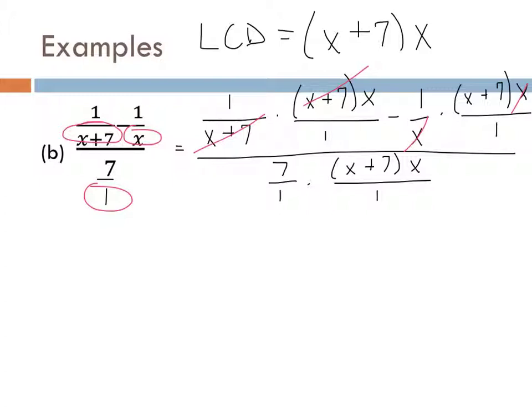Let's write down what we have left so we don't lose anything. We have one A left on top, B squared left, and on the bottom we have A and A squared. We can only cancel things that are multiplied — we can't cancel across pluses and minuses. So I can cancel this A with only one of those A squareds, leaving a single A. The A squared cancels with the A. Now combining: A times A squared is A cubed.